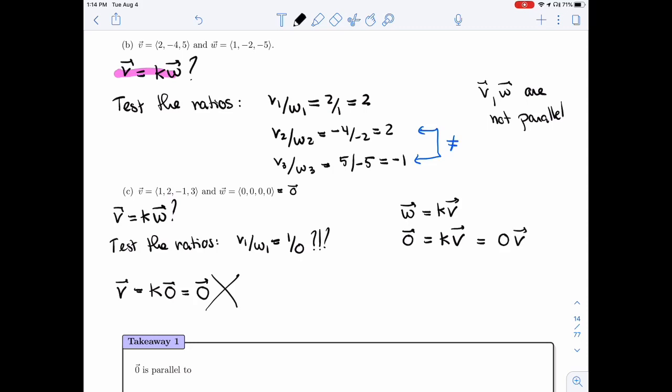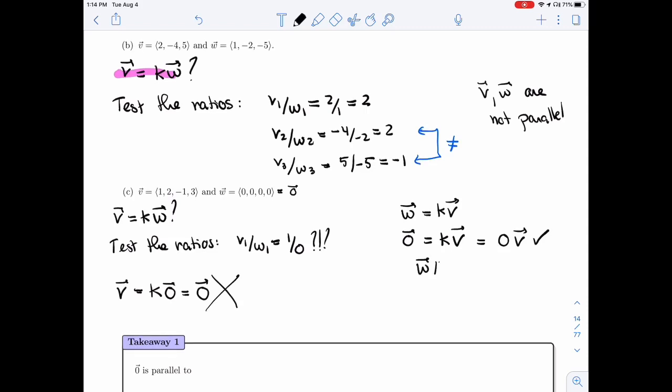If I look at W1 over V1, I'm going to get zero. And if I look at W2 over V2, I'm going to get zero. And so if one of the ratios,